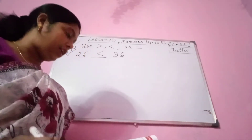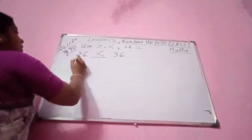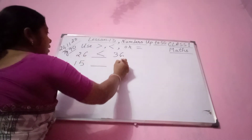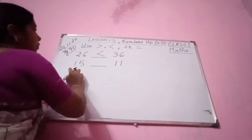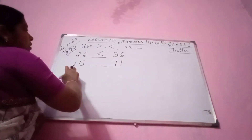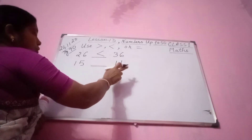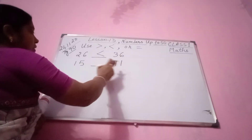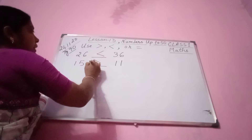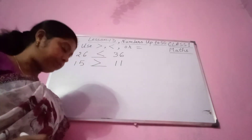Next number — 15 and 11. Please compare 15 and 11. 15 is 1 ten, 5 ones. 11 is 1 ten, 1 one. That is 11. So 15 is bigger. 15 is the bigger number.